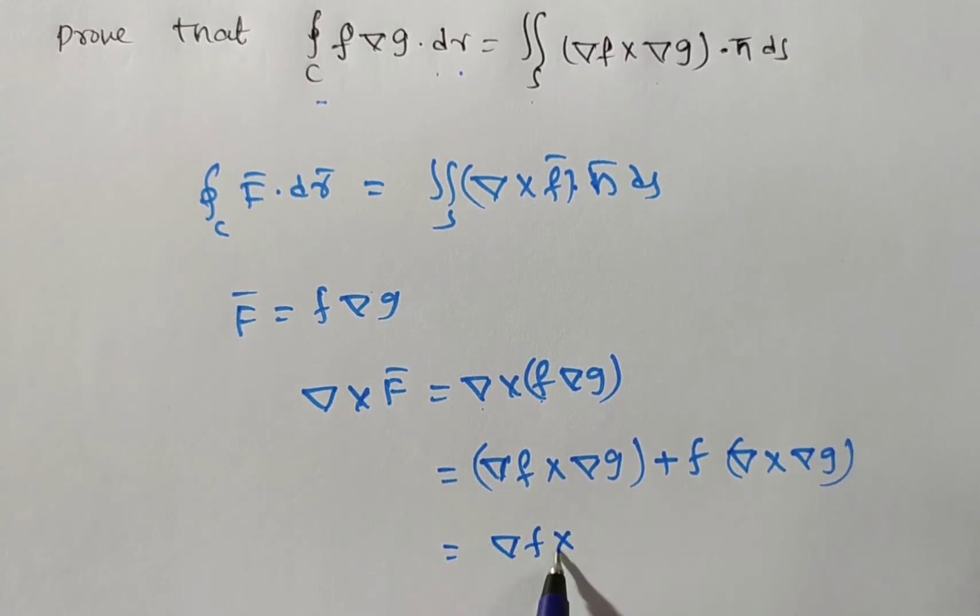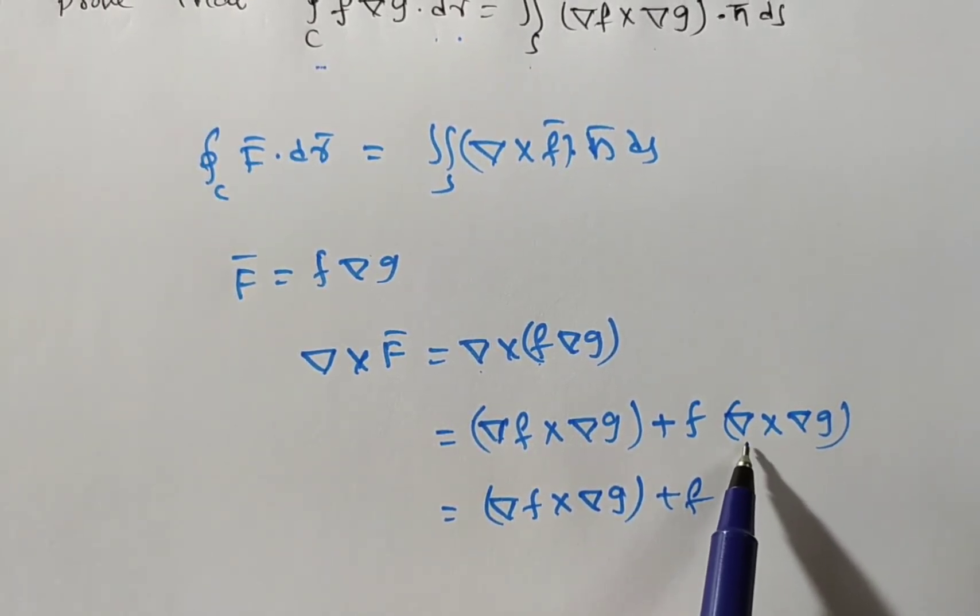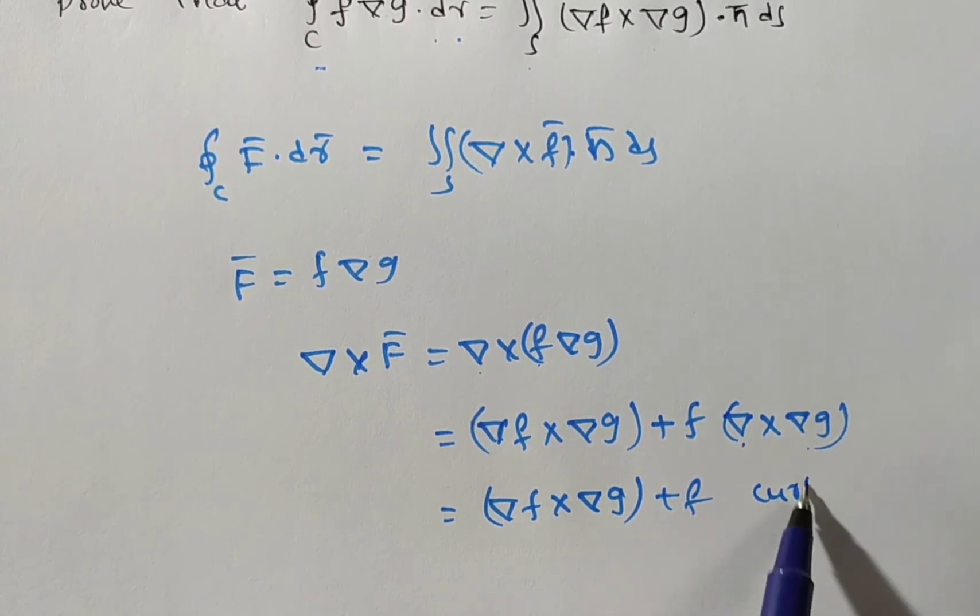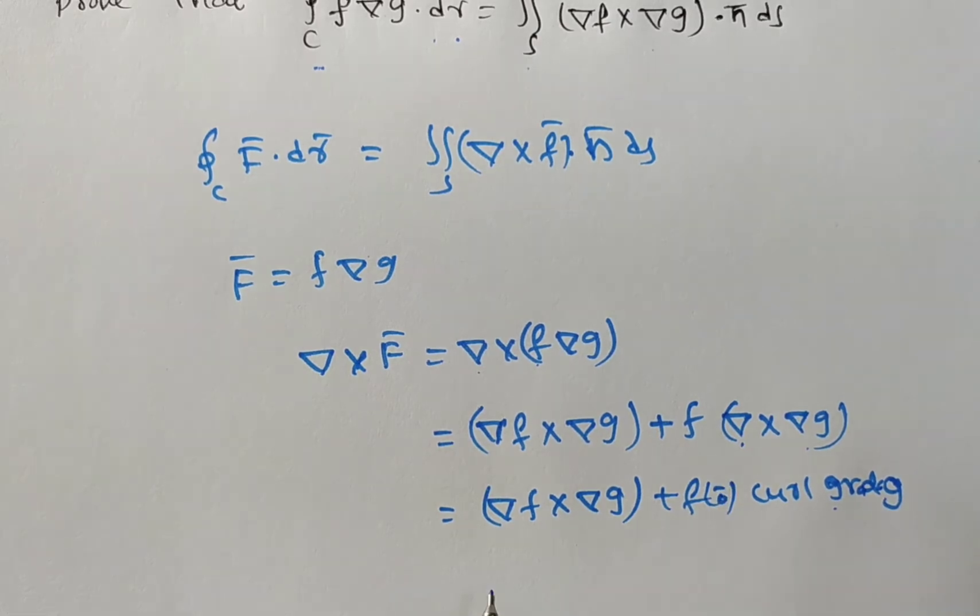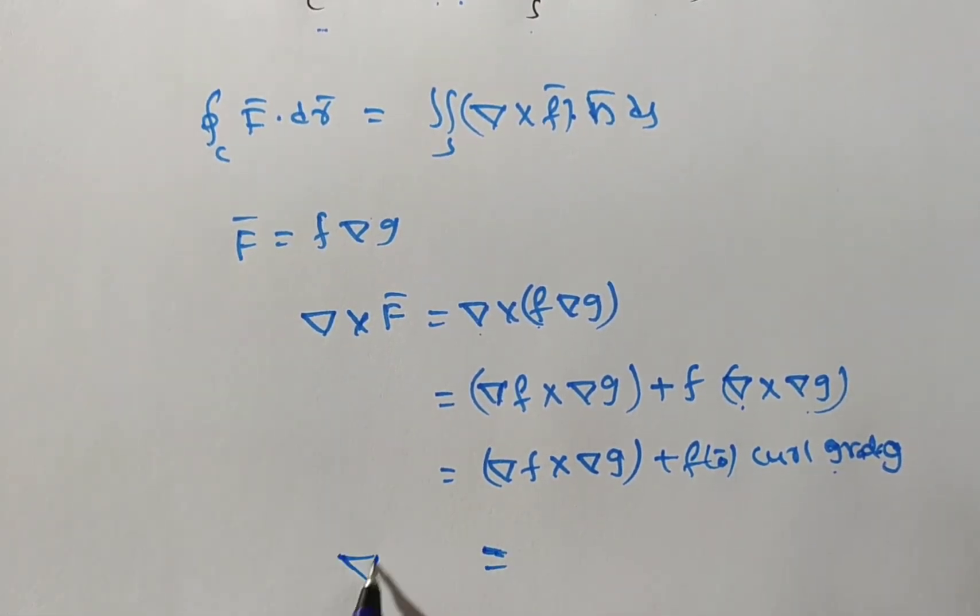Now this is del f cross del g, both are del f and del g both are different. But here you see plus f into, this is del cross del g is nothing but cross product is curl. Del cross of vector is a curl. So curl del g is nothing but gradient of g. So what is mean by curl grad? Zero bar. So f into zero bar. What is f into zero bar? Zero bar only. Therefore del cross f bar is equal to del f cross del g.